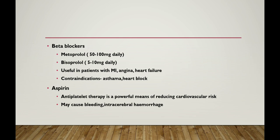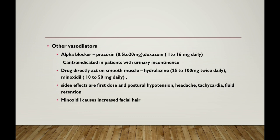Beta blockers such as metoprolol and bisoprolol are useful in patients with myocardial infarction, angina, and heart failure, but are contraindicated in patients with asthma and heart block. Aspirin as antiplatelet therapy is a powerful means of reducing cardiovascular risk but may cause bleeding and intracerebral hemorrhage. Other vasodilators include alpha blockers — prazosin and doxazosin — contraindicated in patients with urinary incontinence. Drugs acting directly on smooth muscle include hydralazine and minoxidil; side effects are first-dose and postural hypotension, headache, tachycardia, and fluid retention. Minoxidil causes increased facial hair growth.